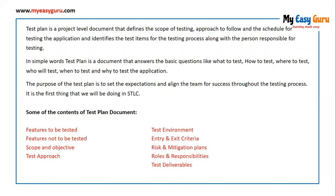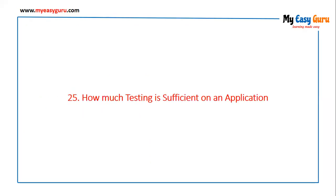Some contents of the test plan document include: features to be tested, features not to be tested, scope and objective, test approach, test environment, entry and exit criteria, risk and mitigation plans, roles and responsibilities, and test deliverables.